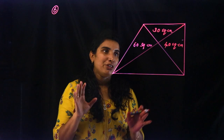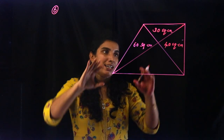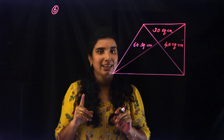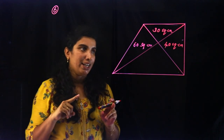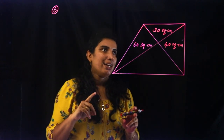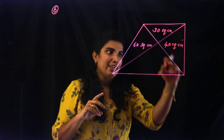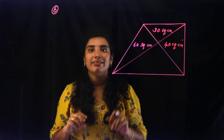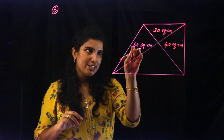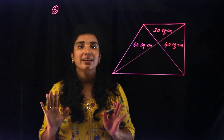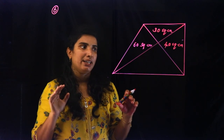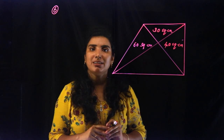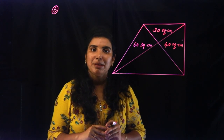So this is a quadrilateral. A quadrilateral is a four-sided closed figure. In this quadrilateral there are four triangles: one triangle, two, three, four triangles. We compute the whole quadrilateral area.